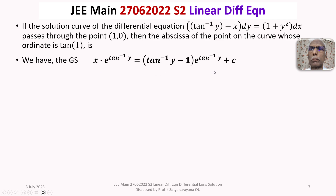This general solution is a relationship between x and y giving rise to a curve. Since c is an arbitrary constant, it gives a family of solution curves. From this family we find the particular curve passing through (1, 0). Substituting x equals 1 and y equals 0 into the general solution will evaluate c.